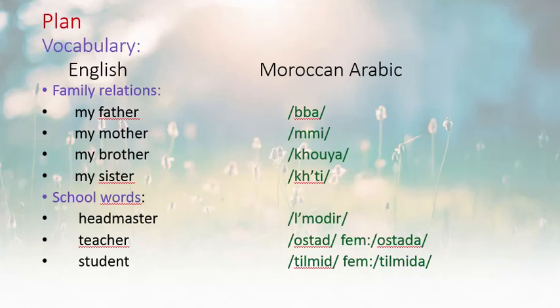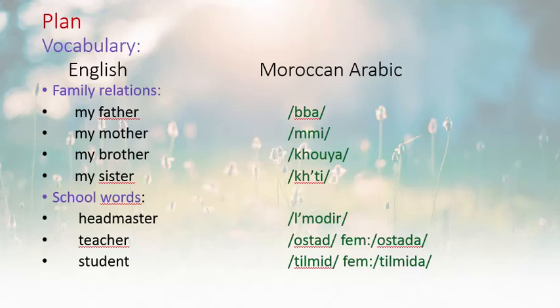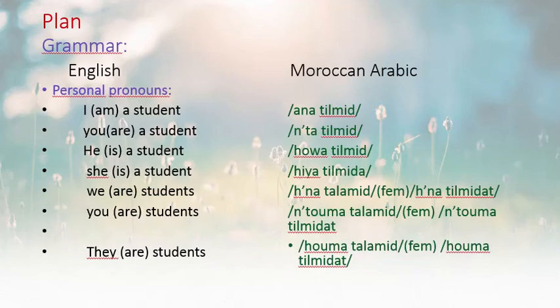Now let's go to vocabulary — some family relations: my father, my mother, my brother, my sister. Some school words: headmaster — and the female version is also given. Teacher: the feminine version in Moroccan Arabic is 'Ustadah,' so 'Ustad' is masculine and 'Ustadah' is feminine. Student: 'Tilmeed' — the female version is 'Tilmeeda.'